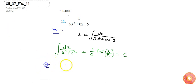Here I can write I equals to integration. If I take out the 9 common from the denominator, I will get (1/9)∫dx/(x² + 6x/9 + 5/9).